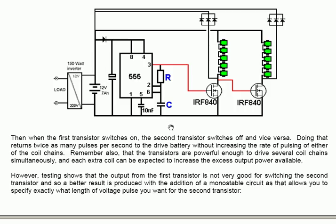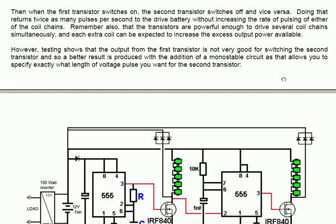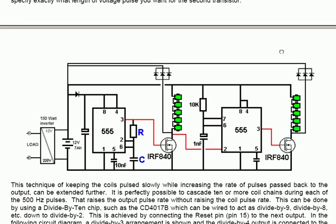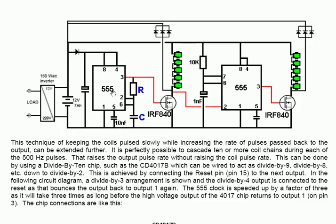When you do that, the circuit returns twice as many pulses per second to the drive battery. But it does it without increasing the rate of pulsing of either of the coil chains. They turn on and off at their original rate, but they just do it alternately. Remember also that the transistors are powerful enough to drive several coil chains simultaneously. And each extra coil can be expected to increase the excess output power available. However, testing shows that the output from the first transistor is not very good for switching the second transistor on and off. So a better result is produced with the addition of a monostable circuit. As a monostable circuit allows you to specify exactly what length of voltage pulse you want for the second transistor.